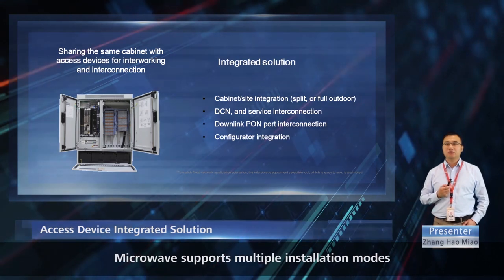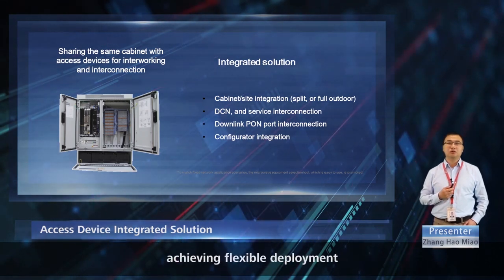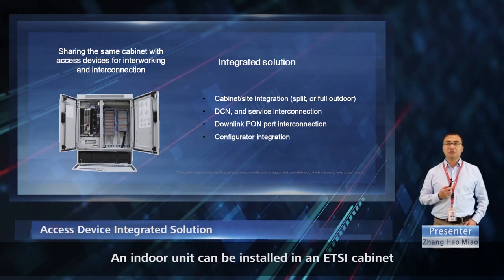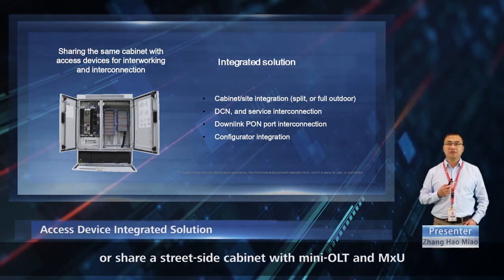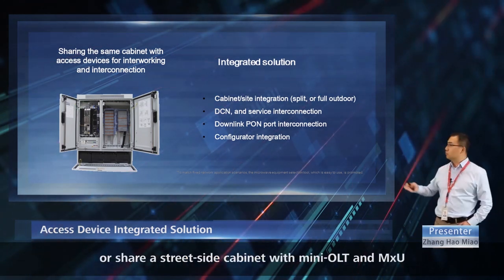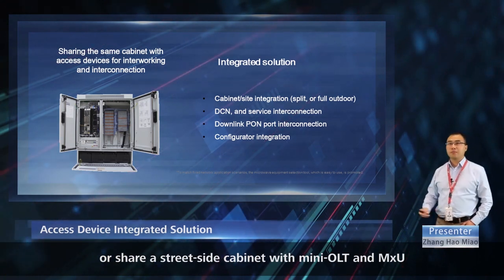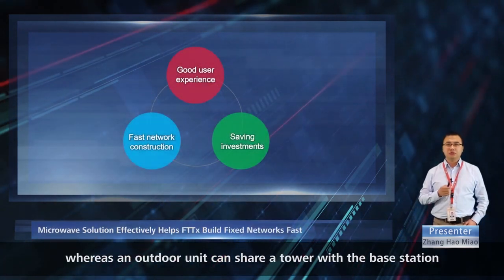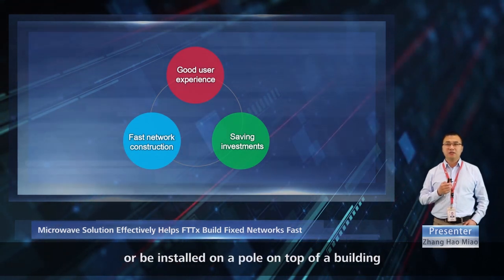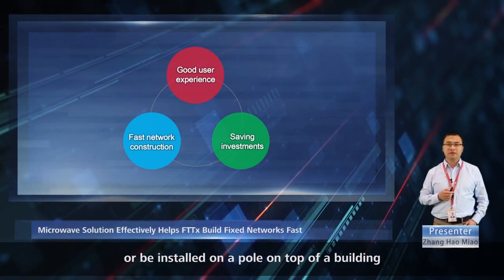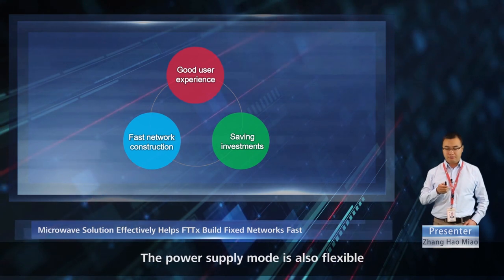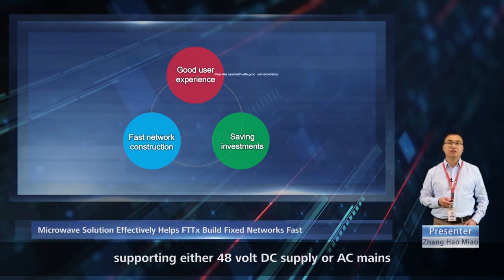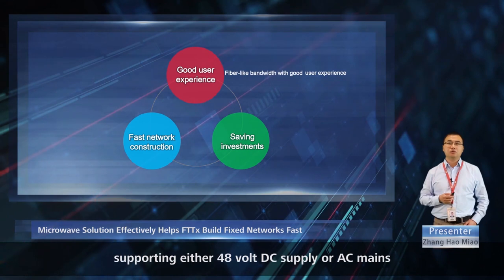Microwave supports multiple installation modes, achieving flexible deployment. An indoor unit can be installed in an ETSI cabinet or share a street-side cabinet with Mini-OLT and MXU. An outdoor unit can share a tower with the base station or be installed on a pole on top of a building. The power supply mode is also flexible, supporting either 48-volt DC supply or AC mains.